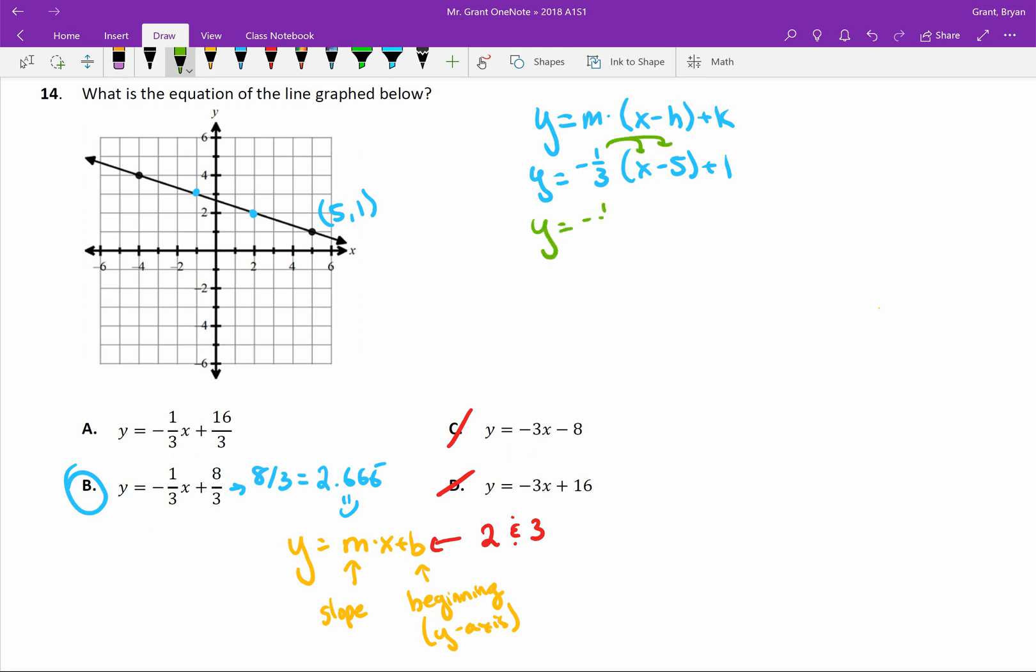So I'm going to get negative 1 third x, and then when I do negative 1 third times negative 5, I'll do that over off on the side. Negative 1 third times negative 5, we should know that maybe we'll put them both as fractions, and fractions are multiplied straight across. A negative times a negative is a positive 5, and 3 times 1 is 3. I'm getting positive 5 thirds here, and then plus 1.